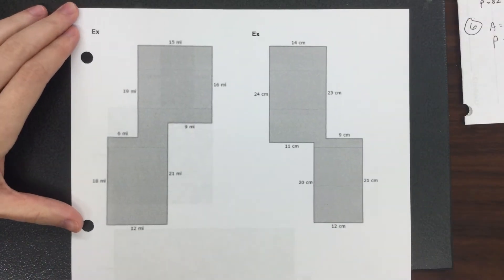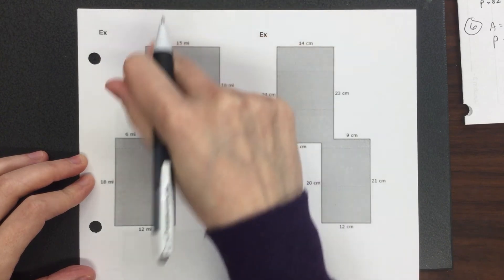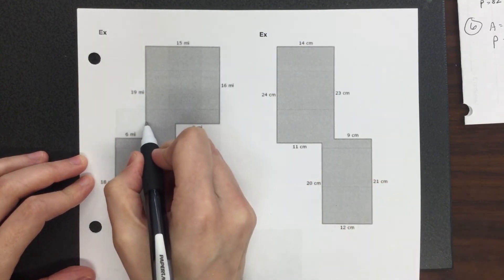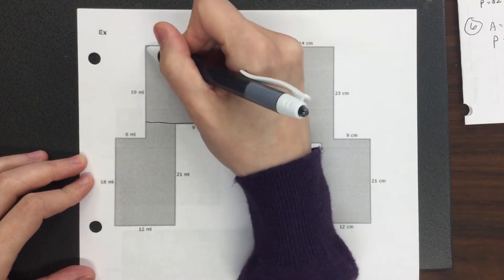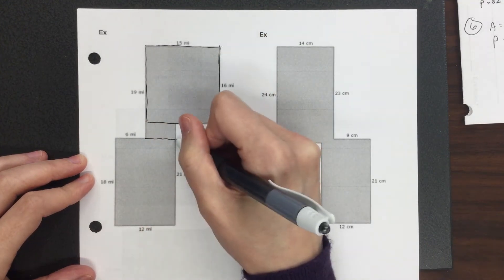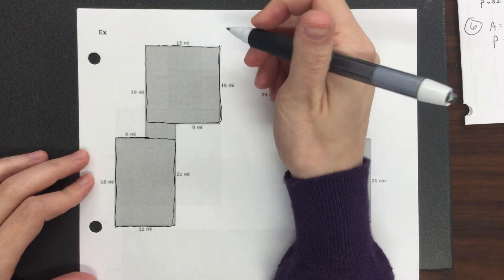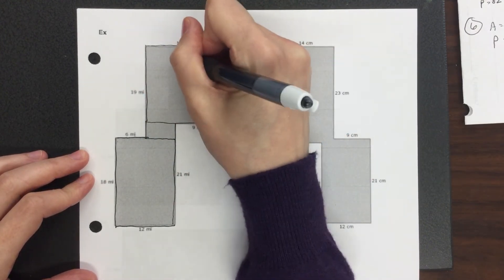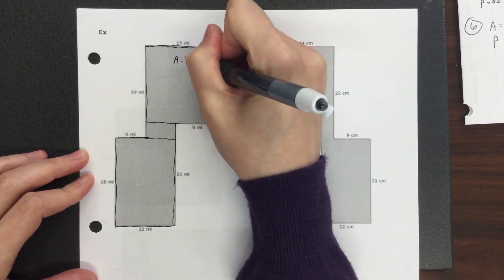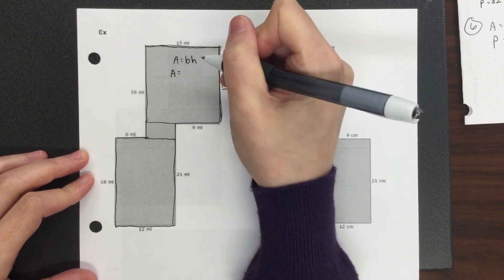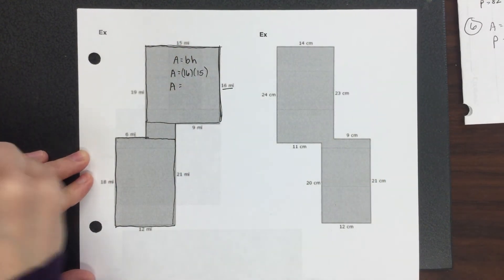Looking at another example. You could divide it different ways — a rectangle here with a big long rectangle and two smaller rectangles on the side. I chose to find one big shape and then another shape, so two big shapes with a smaller one. For the first rectangle, the length is 16 and the height is 15, so area equals base times height: 16 times 15 equals 240.